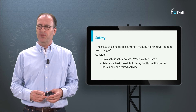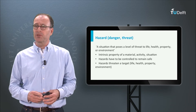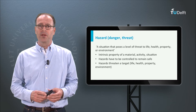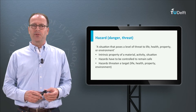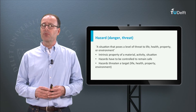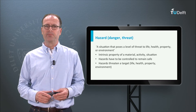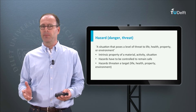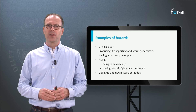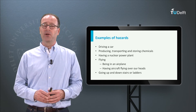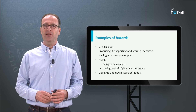Safety has meaning only because there are threats — we call these threats hazards. They are defined as a situation that poses a level of threat to life, health, property, or the environment. Hazards can be seen as part of the risk triplet: the scenario and the consequence. Examples of hazards are driving a car, running a chemical plant or a nuclear reactor, or flying airplanes — a hazard both for the people in the airplane and the people and assets on the ground.